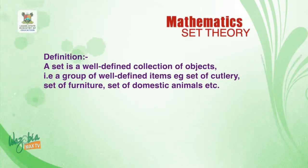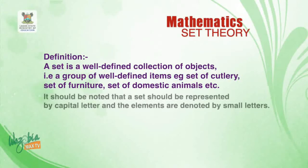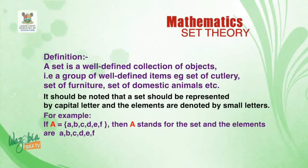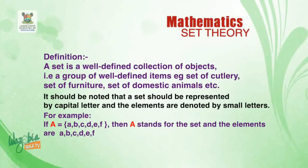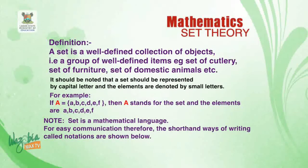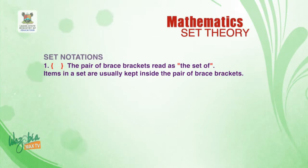A set is a well-defined collection of objects — that is, a group of items such as a set of cutlery, set of furniture, set of animals, and so on. It should be noted that a set should be represented by capital letters and the elements represented with small letters. For example, set A in capital letter has elements small a, b, c, d, e, f.